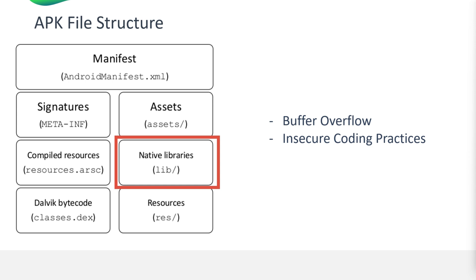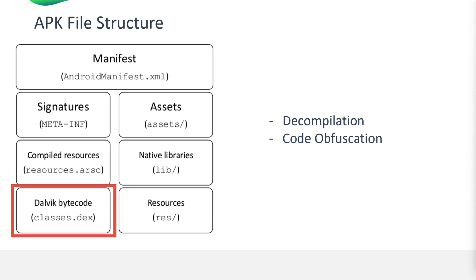Next is the Dalvik bytecode. Dalvik bytecode is contained in the .dex file, which is executed by the Android Runtime (ART) — these files are the compiled source code of the application. Use tools like JADX to decompile .dex files and review the source code for vulnerabilities such as hard-coded credentials, insecure network calls, and logic flaws. Also check if the code is obfuscated — while obfuscation can protect intellectual property, it can also complicate security analysis.